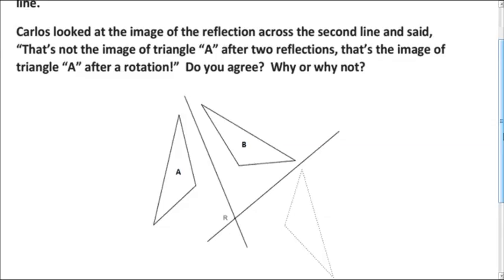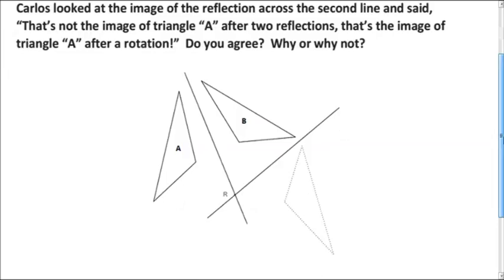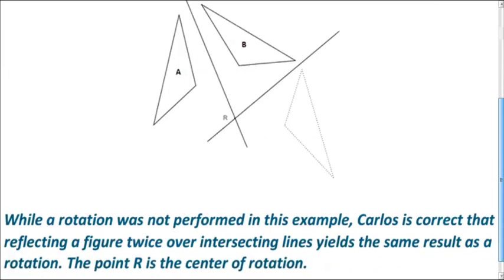Well, it turns out that Carlos is correct. We didn't actually do a rotation, but whenever you do two reflections, you're also doing a rotation. And the center of rotation is going to be where the two lines of reflection intersect.